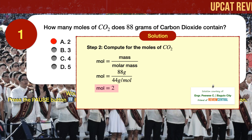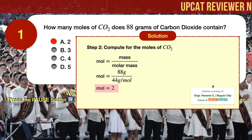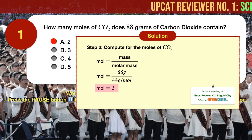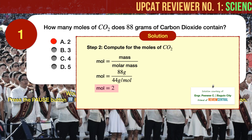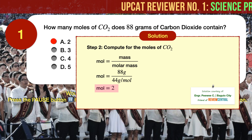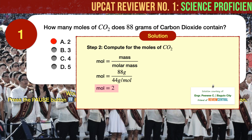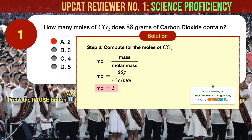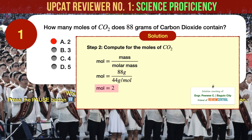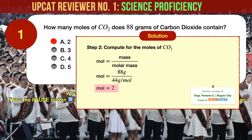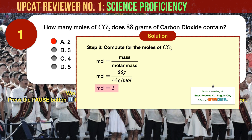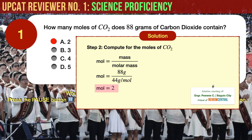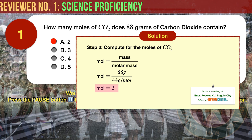Now let's compute for the moles of carbon dioxide. Moles is equal to mass over the molar mass. The mass is given to be 88 grams, and we computed the molar mass to be 44 grams per mole. Therefore, the moles of 88 grams of carbon dioxide is equal to 2.